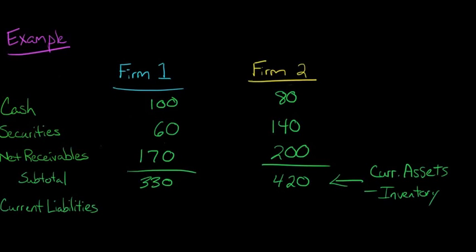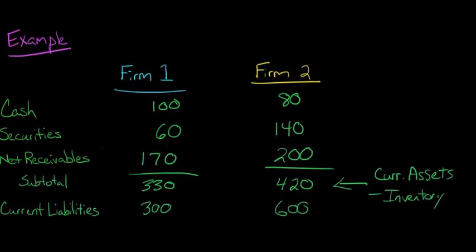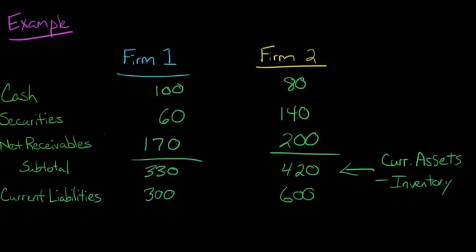And now we need to know current liabilities. And let's say for firm 1, current liabilities are 300. And then for firm 2, current liabilities are 600.